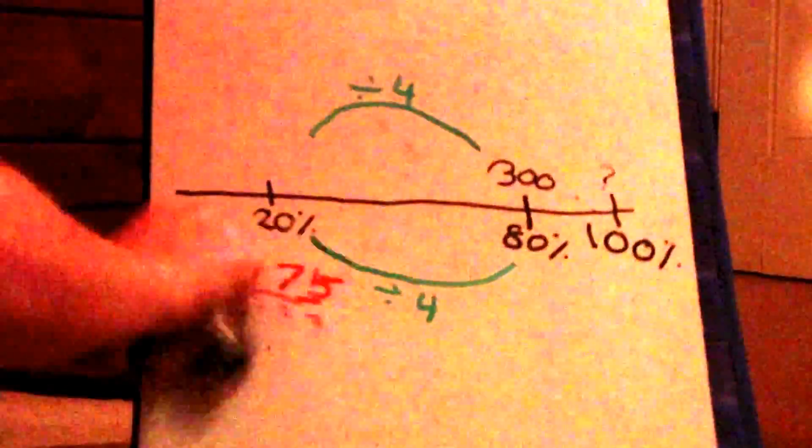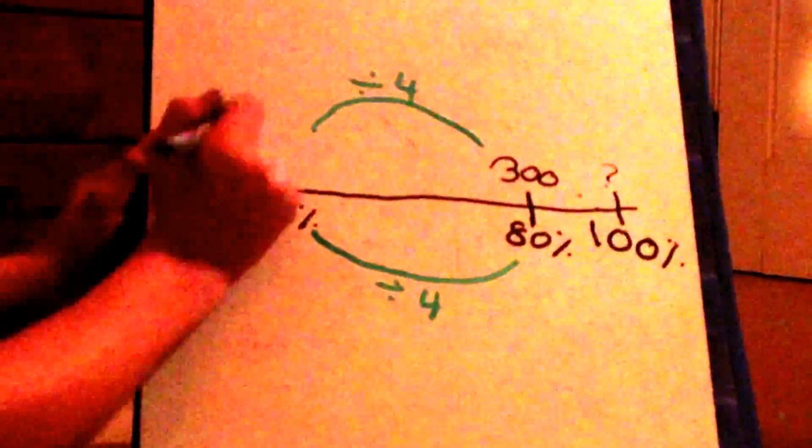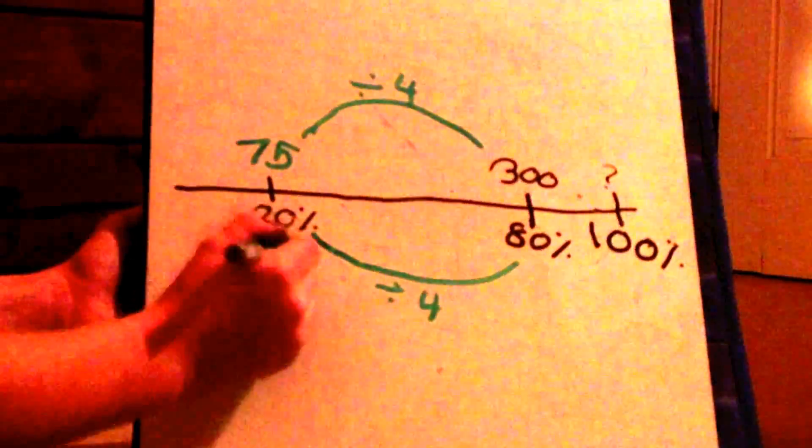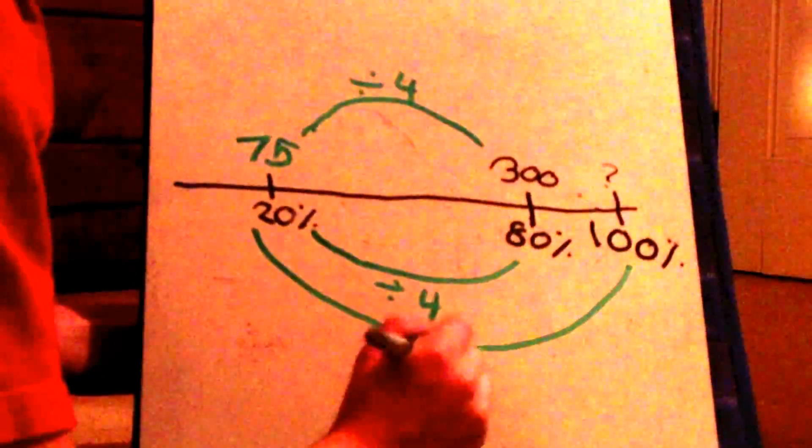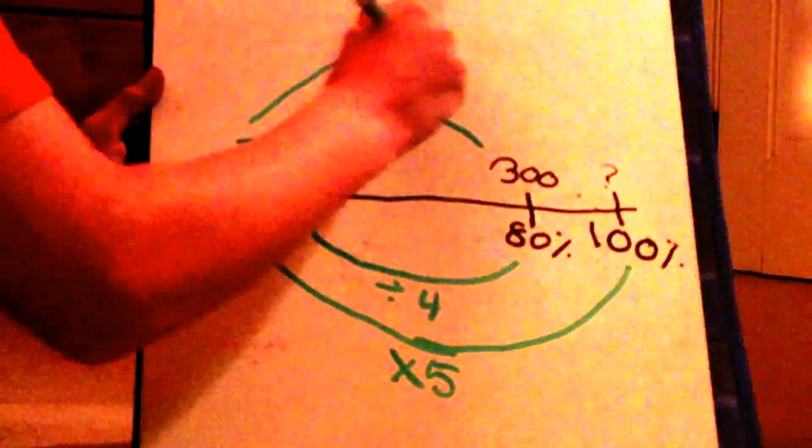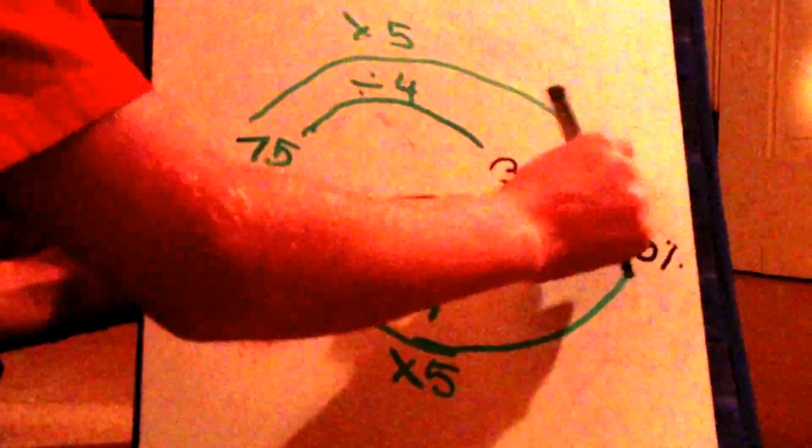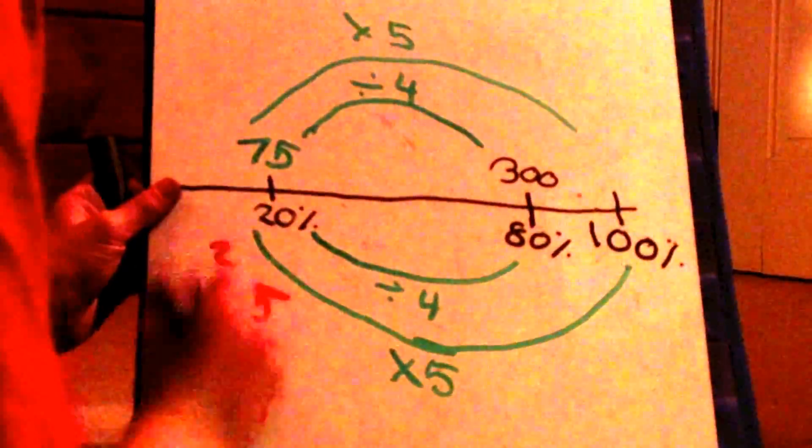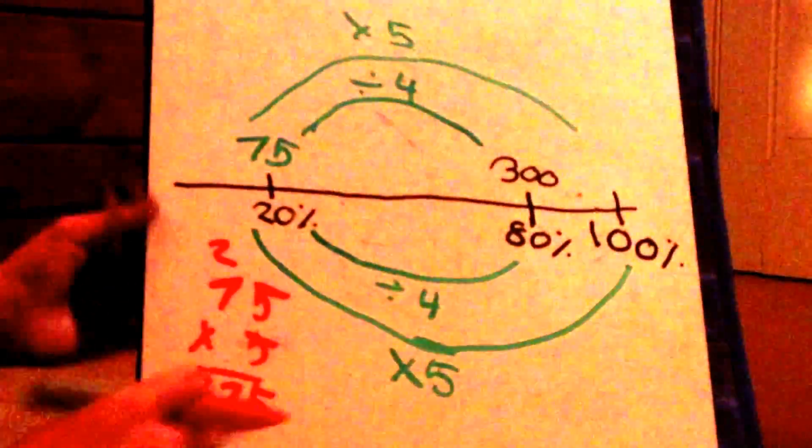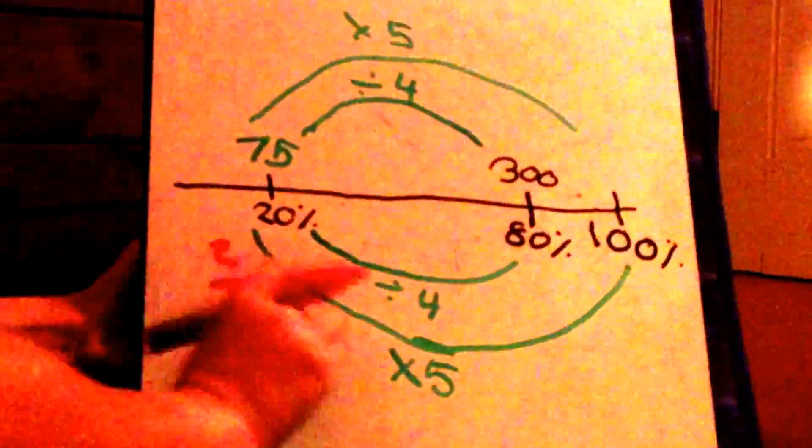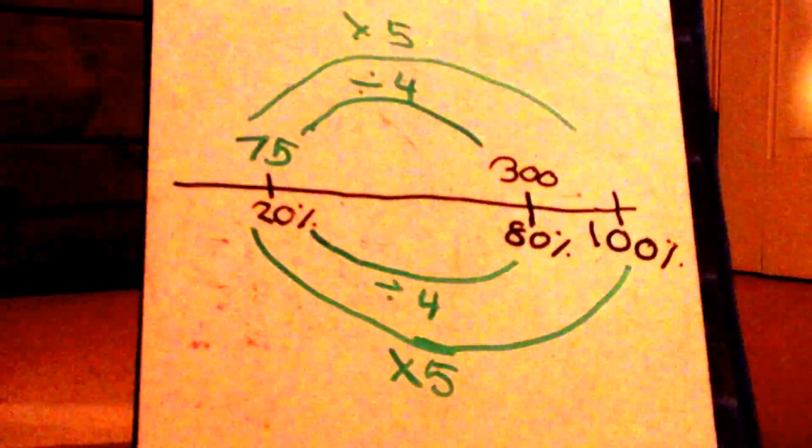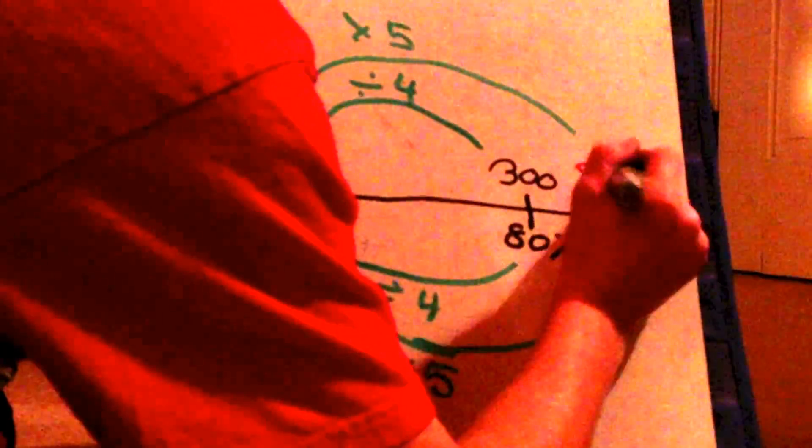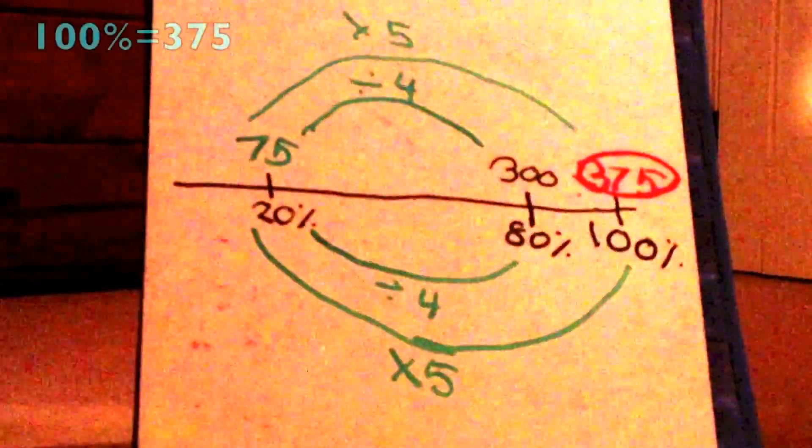So this means that 20% of whatever the 100% is, is 75. So now, to get 100%, we need to multiply 20% by 5. So we do the same thing to the top number. So we multiply 75 by 5, which you will notice will give us 375. So if 80% is 300, then 100 would be 375.